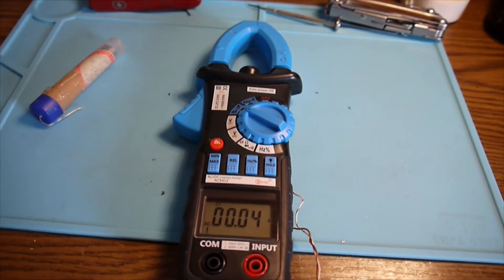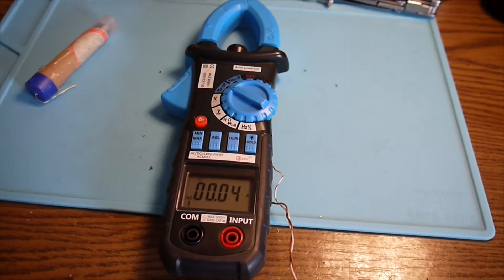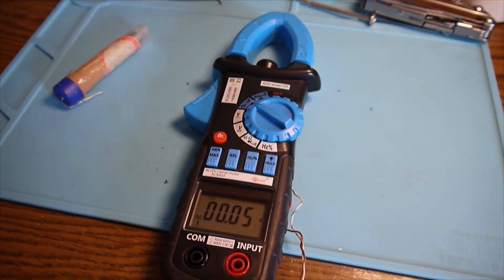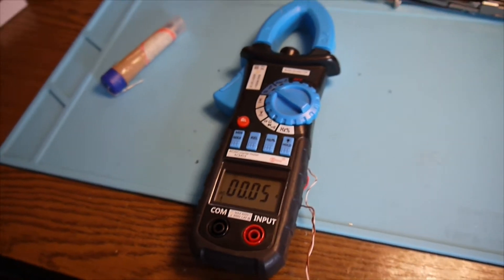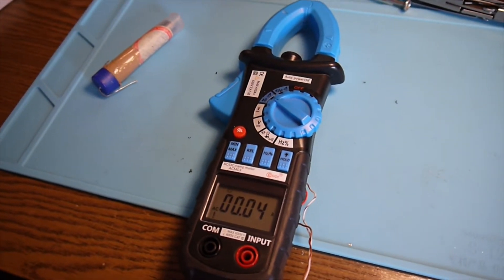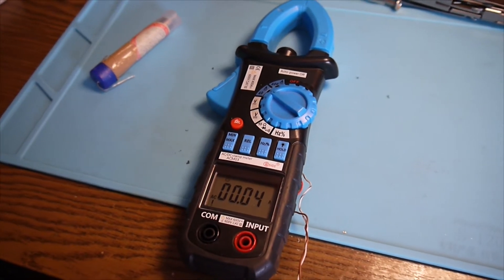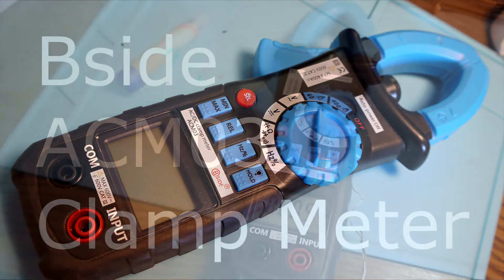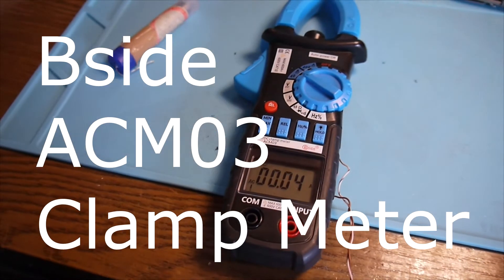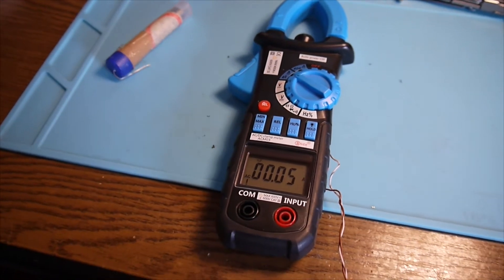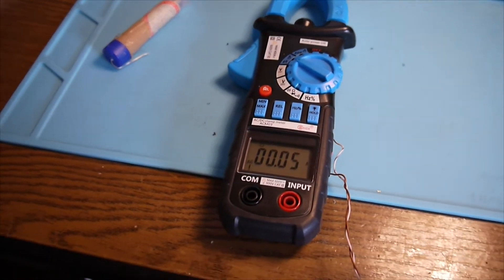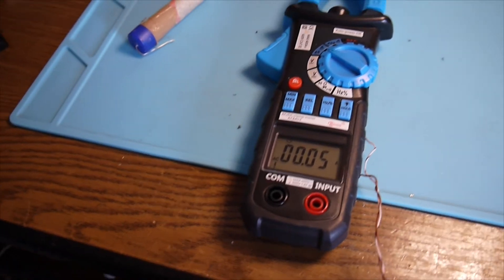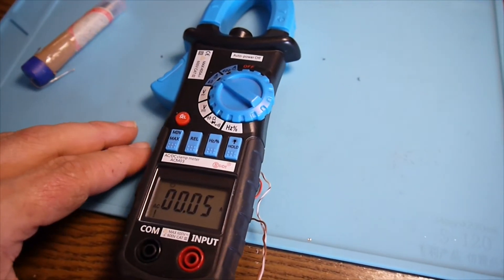Hello again everybody. Today I'm going to show you something about clamp meters. I really love this ACM03 from B-side. It used to be a really nice clamp meter. I use it a lot because I have solar panel projects and I'm measuring the currents all the time.